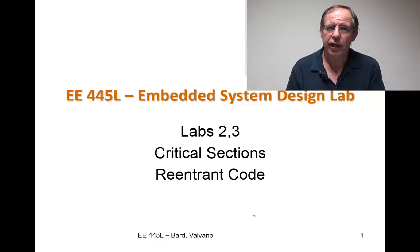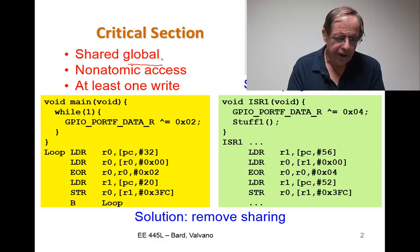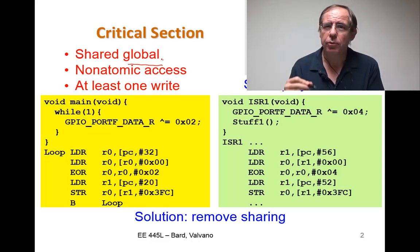Hi, John Valvano here. Today, we're going to talk about critical sections. The idea of a critical section is when we have a global variable that's shared between threads, we might have a problem.